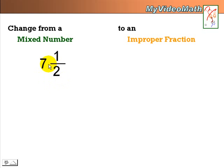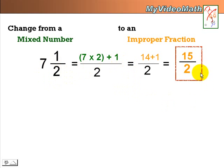We're going to convert 7 and 1 half. 7 times 2 plus 1. And the answer is 15 over 2.